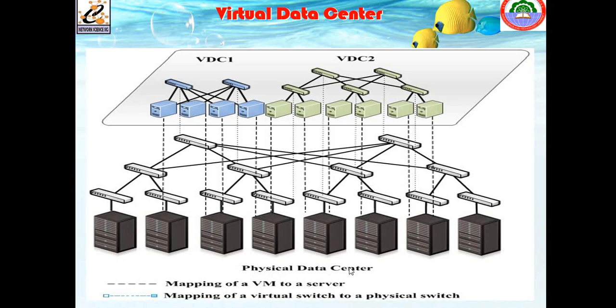In the example image, we see the physical data center with colored-line mappings of virtual switches to physical switches and virtual machines to servers. We have aggregation switches and core switches, with servers connected to virtual servers, creating virtual data center one and virtual data center two. If a data center is distributed across geographic regions, each distributed data center needs to be interconnected — this is what we will examine next.